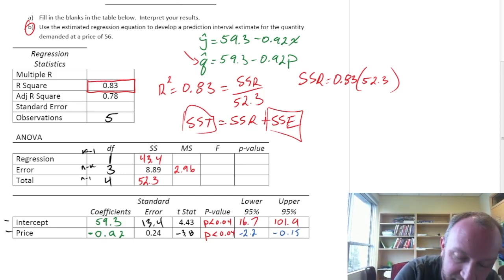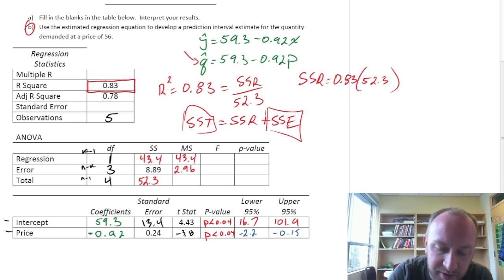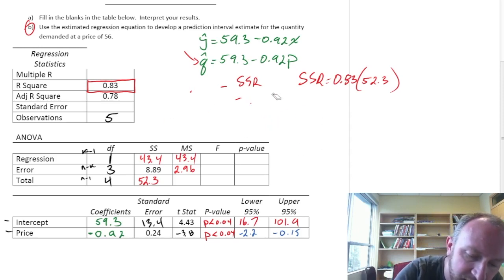Mean square, again this is SS, the sum of square regression over its degrees of freedom. That denominator is just 1. So this is a simple enough calculation, 43.1. Now we can calculate, here's our F statistic.